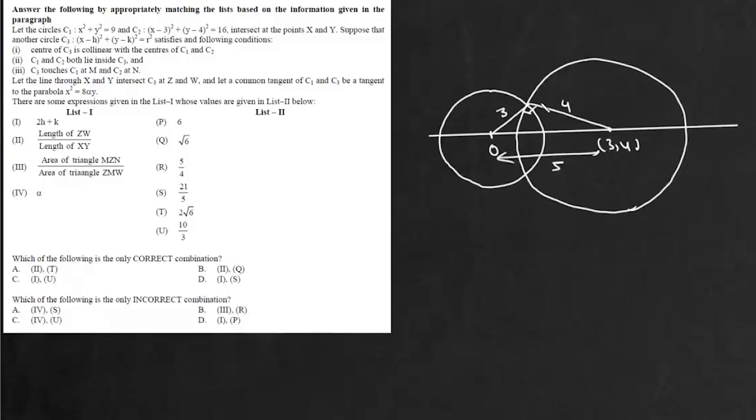Now it says we have another circle which center is C3 which is collinear with centers of C1 and C2 and C1 and C2 both lie inside C3 and it touches them at M and N. So we have this circle which is going to touch both of them at M and N. So this point is M and this point is N. Now we know that this distance is 5, this is 3 and this is 4. So radius of this bigger circle will be 6 units.